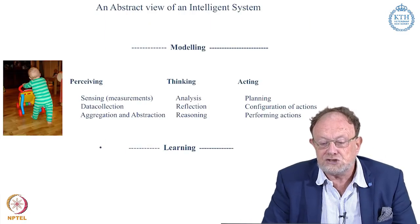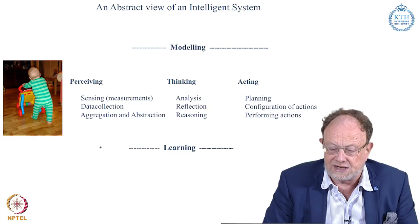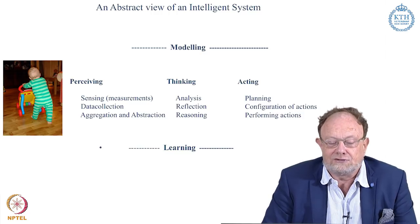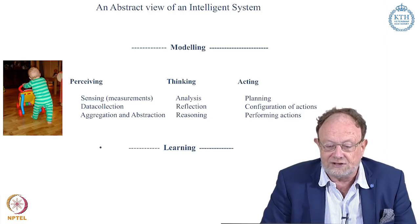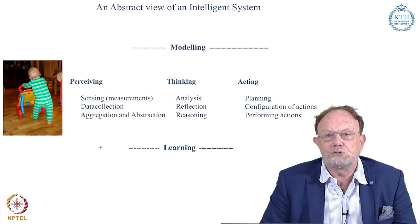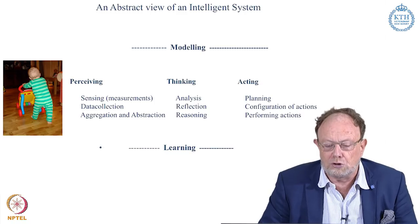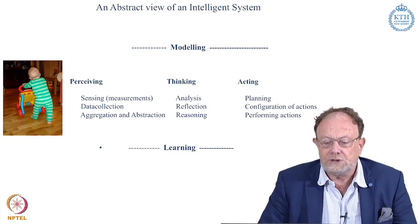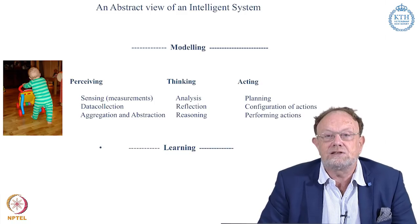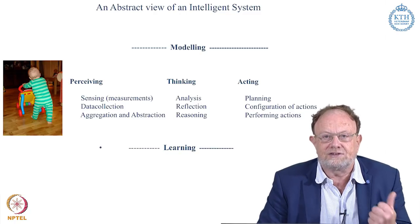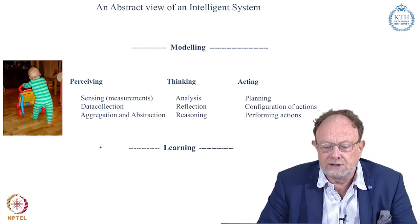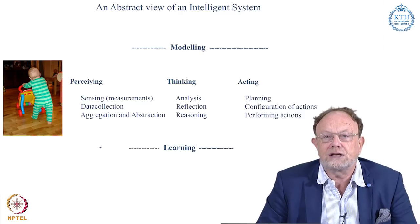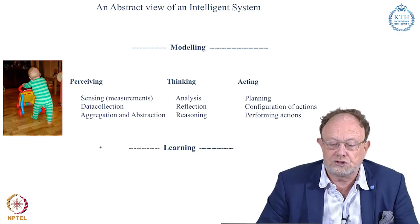For managing any kind of intelligence task — let us take a simple example of a child walking — we need a number of ingredients. First of all, we need a basic conceptual repertoire for modeling the world, for understanding the world. Then we need capabilities for perception, including sensing, data collection, aggregation, and abstraction.